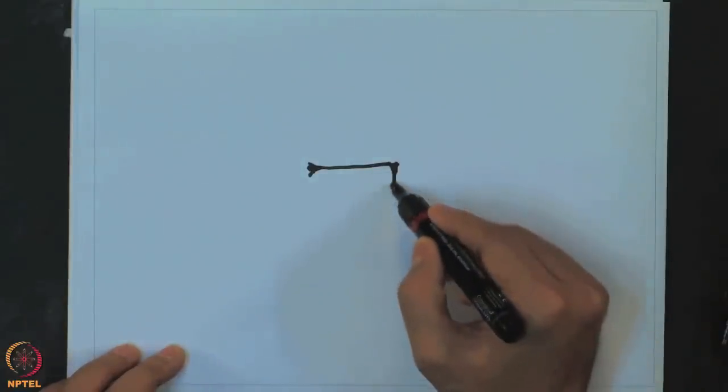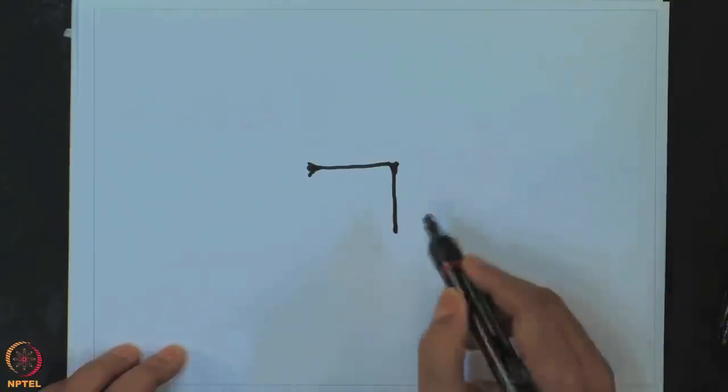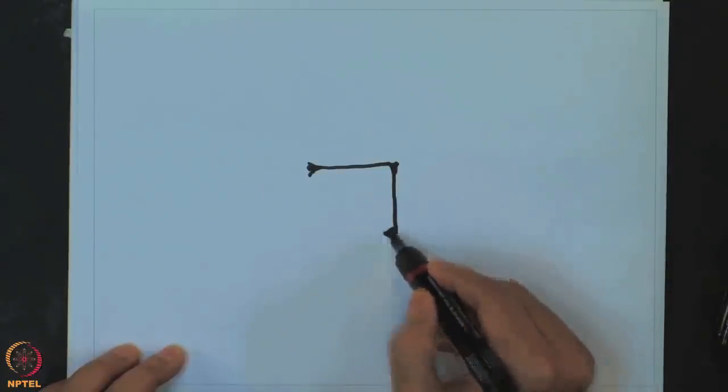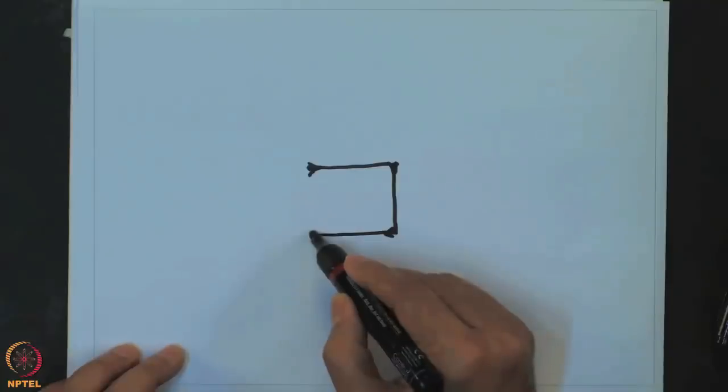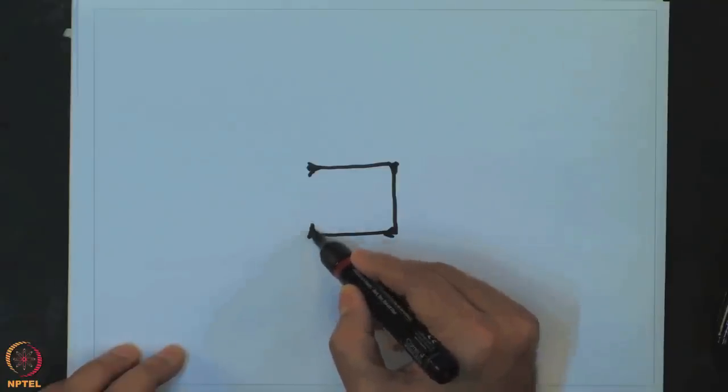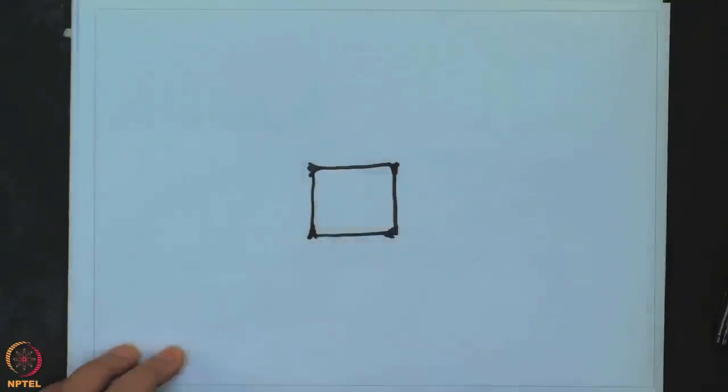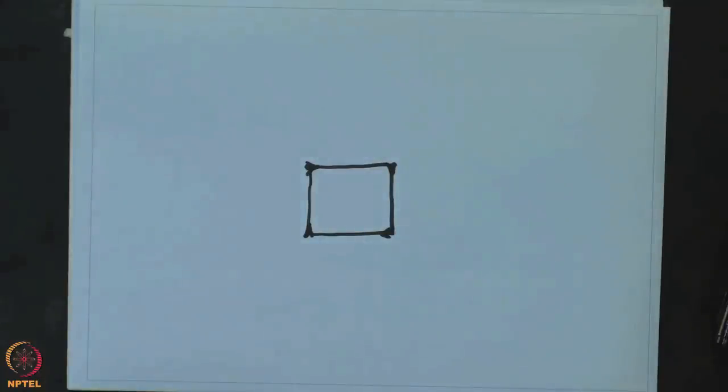It will then move forward 100 pixels. It will again turn right 90. Then again move forward 100 steps. So what has the turtle drawn as a result of this? It has drawn a square of side length 100 pixels. And after that the turtle is going to wait, and then the whole window will vanish and the program will come to a halt.